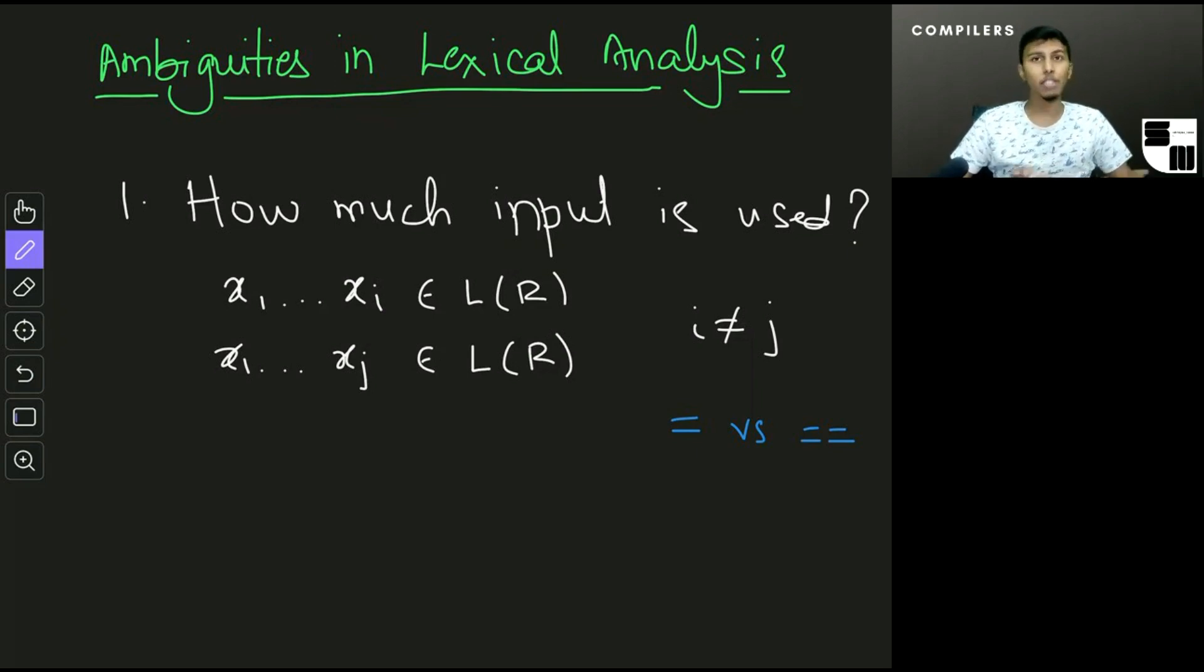And this is actually solved in a very simple way and the solution has a name: maximal munch. The solution is if you have two different length strings in the input which both belong to L of R, then just take the longer one. If i is greater than j, take it till xi. If j is greater than i, take it till xj. So whenever you have two equal symbols together, it will always consider it as the relational operator checking equality, not assignment.